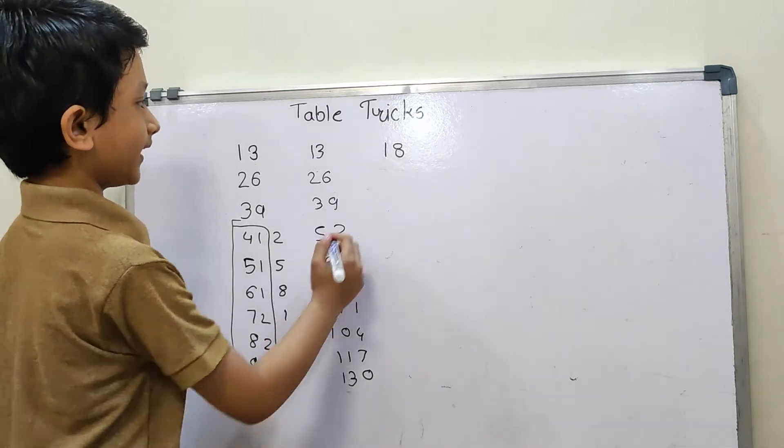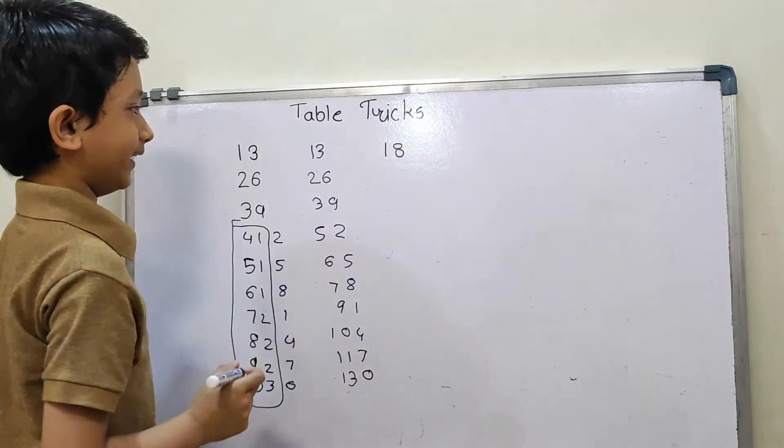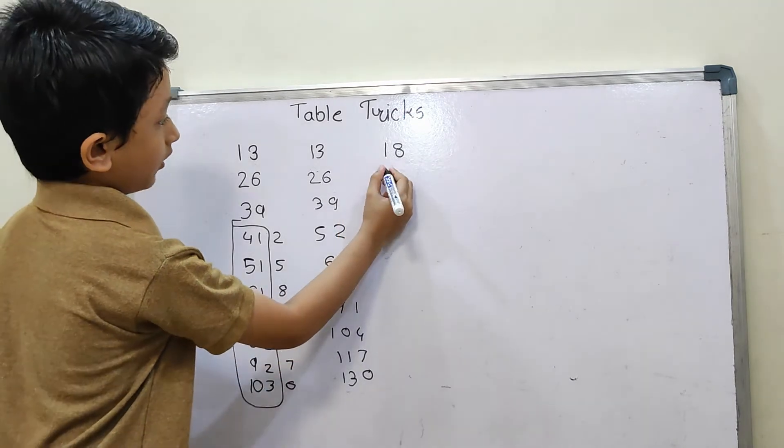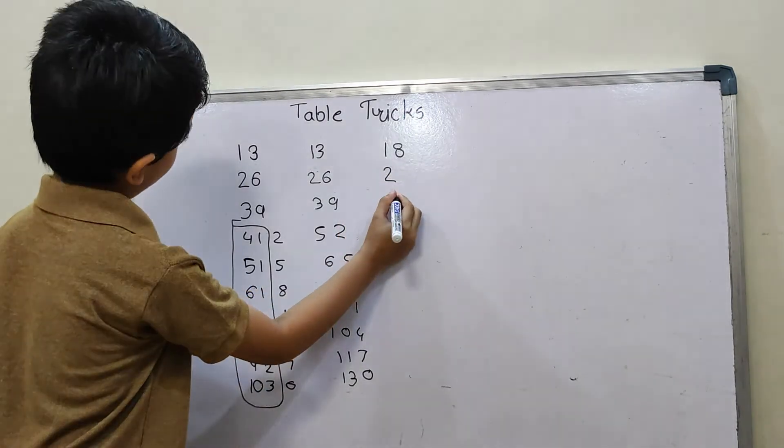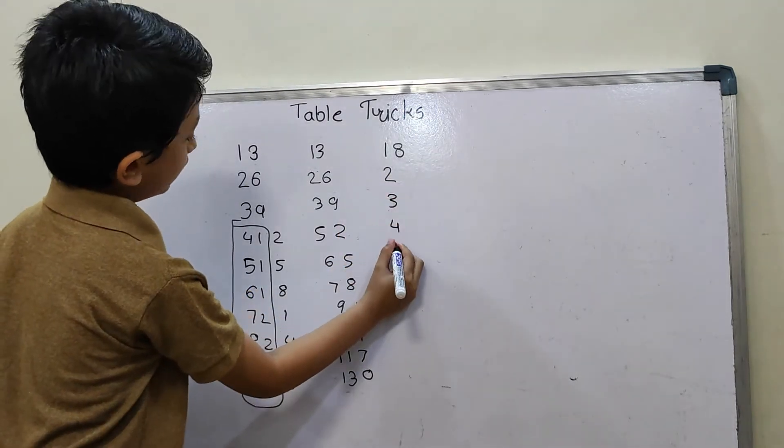So here we are going to add in our 13. Then we are going to add 10 to 12 as it is. Now counting: 1, 2, 3, 4.